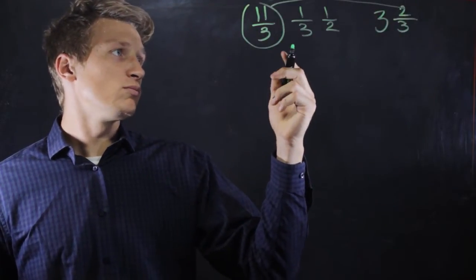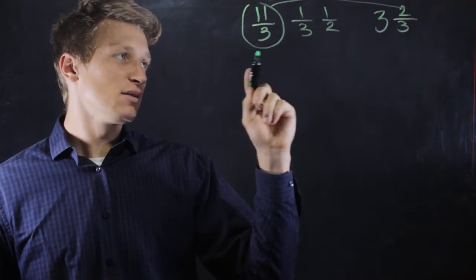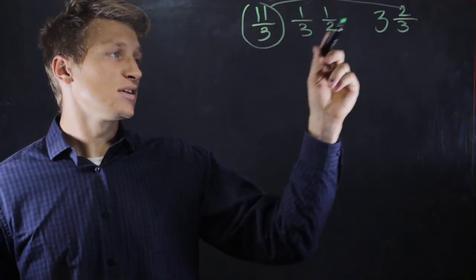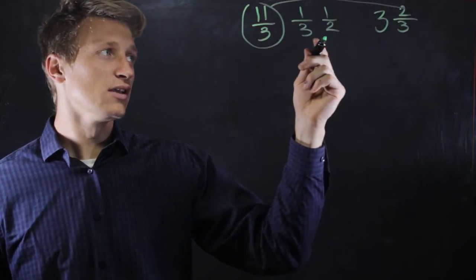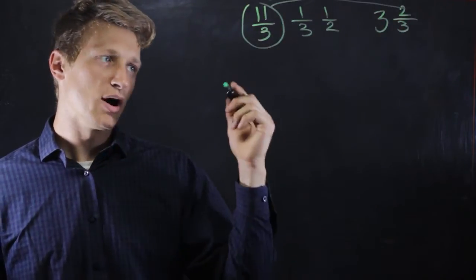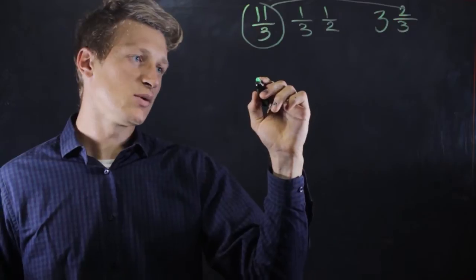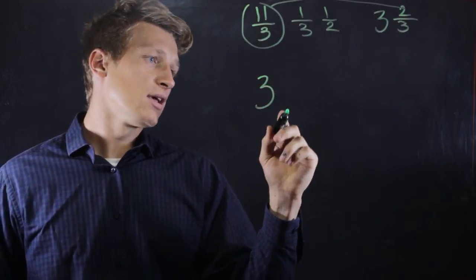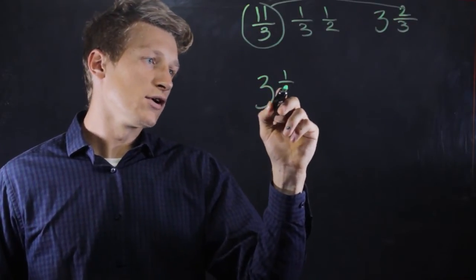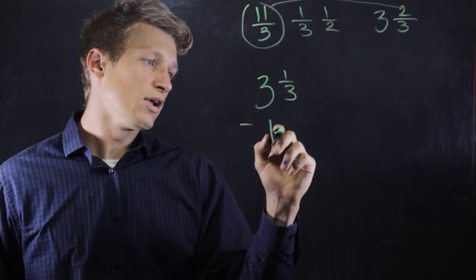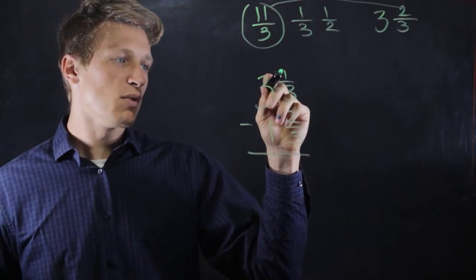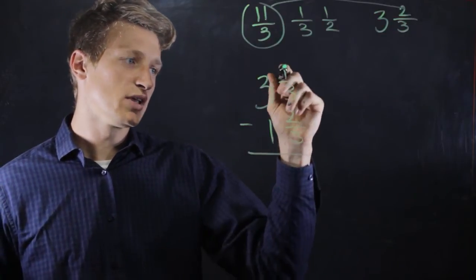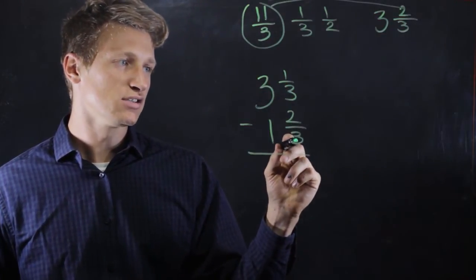Now the problem with subtracting mixed numbers is that sometimes the numerator of the top number can be smaller than the numerator of the bottom number. For example, let's say we have 3 and 1 third minus 1 and 2 thirds. See, the numerator up here is smaller than the numerator down here, so we can't easily subtract this fraction.